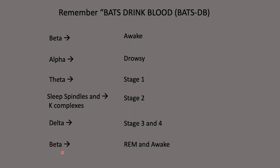And once we wake up we see those beta waves again. So that's a quick mnemonic — in the middle of an exam you can just write down BATS DB, fill it out as: awake, drowsy, stage 1, stage 2, stages 3 and 4, REM, and awake again, and you should be able to answer relatively any question relating to this topic.